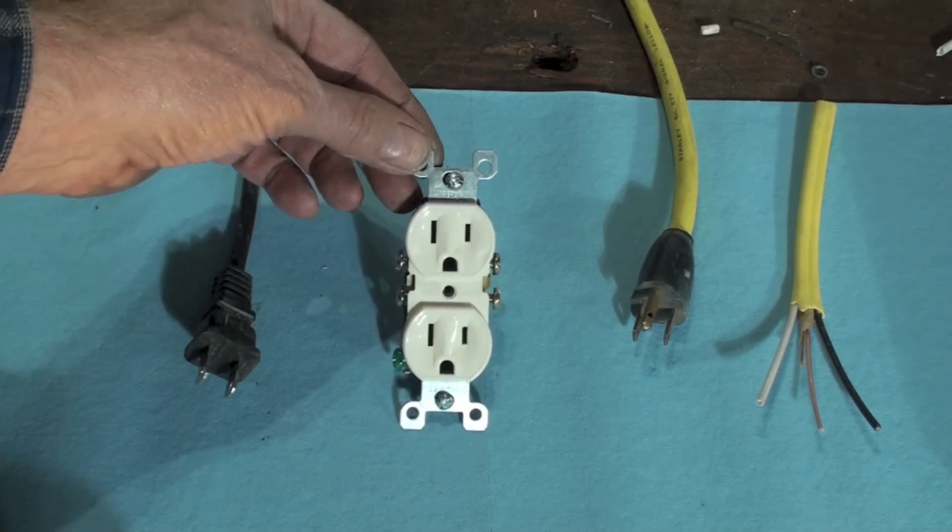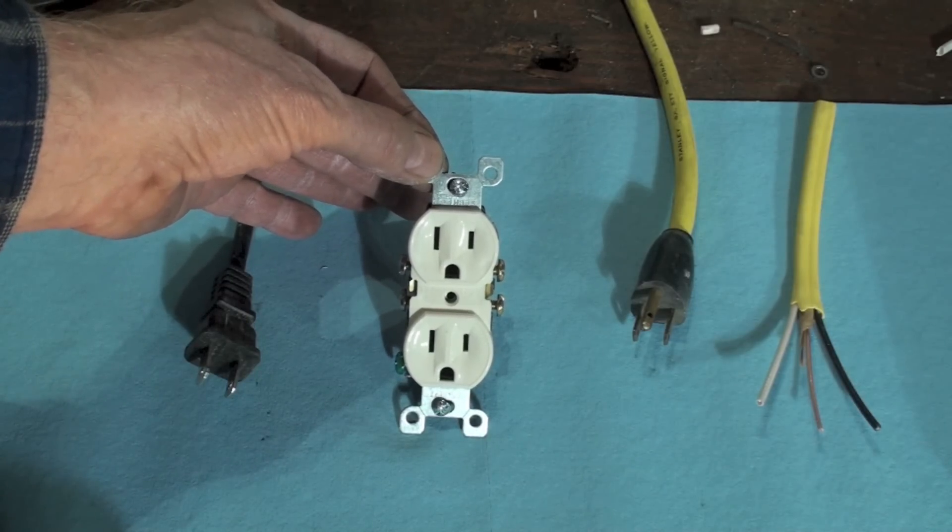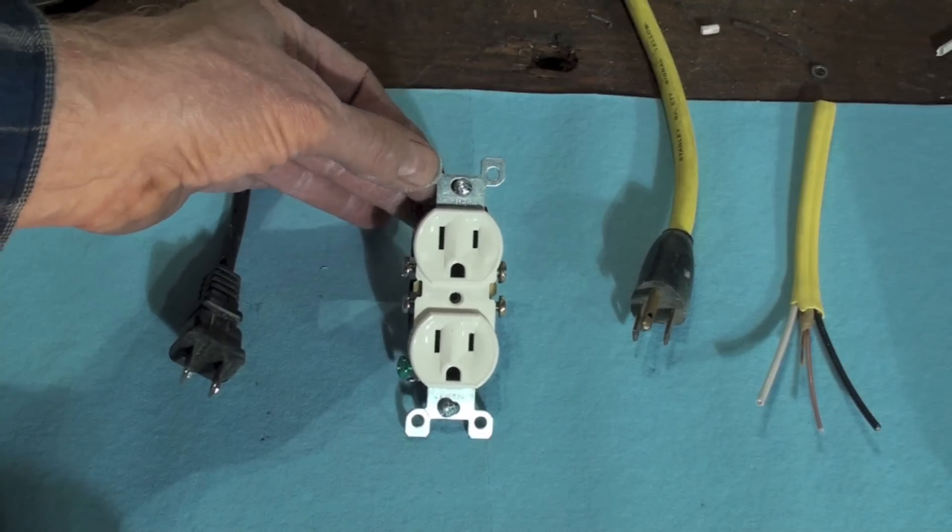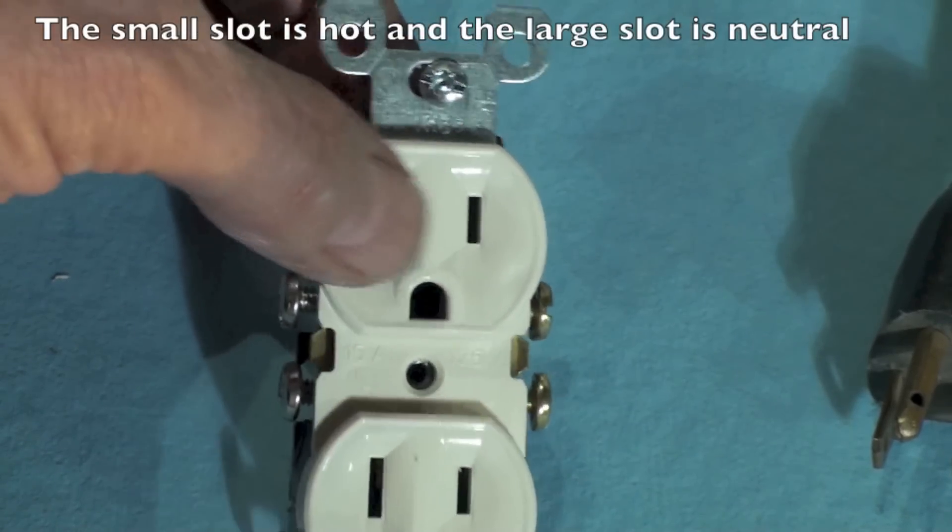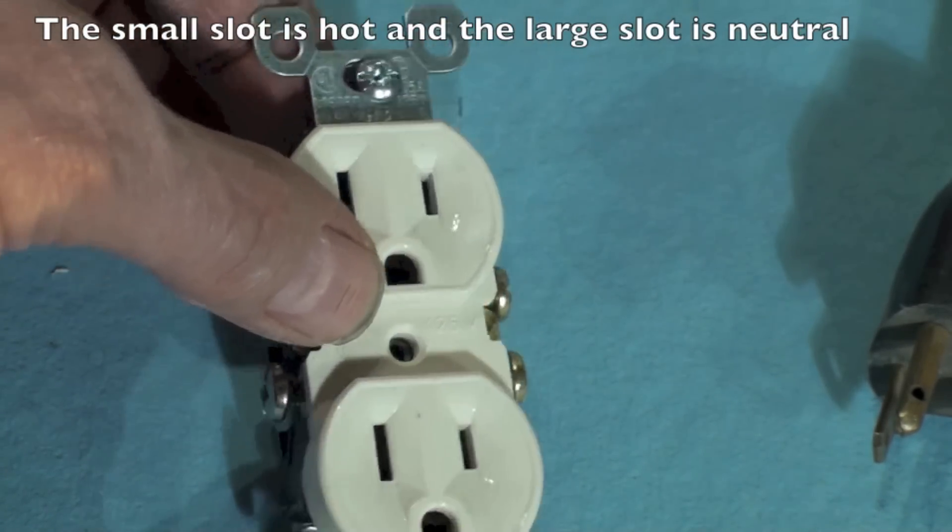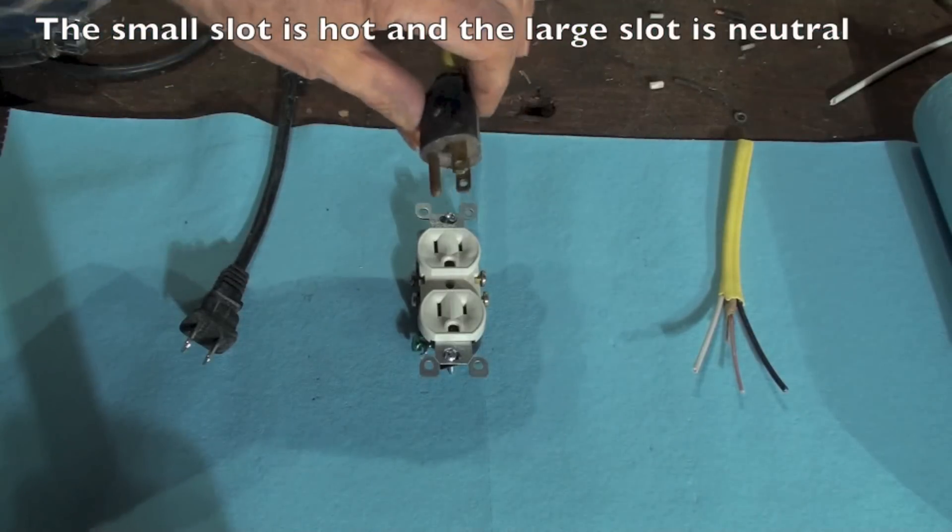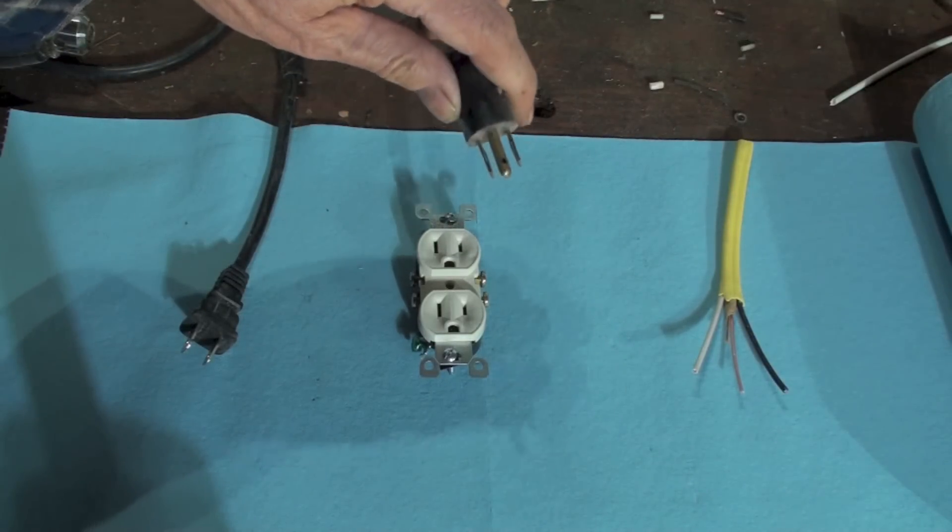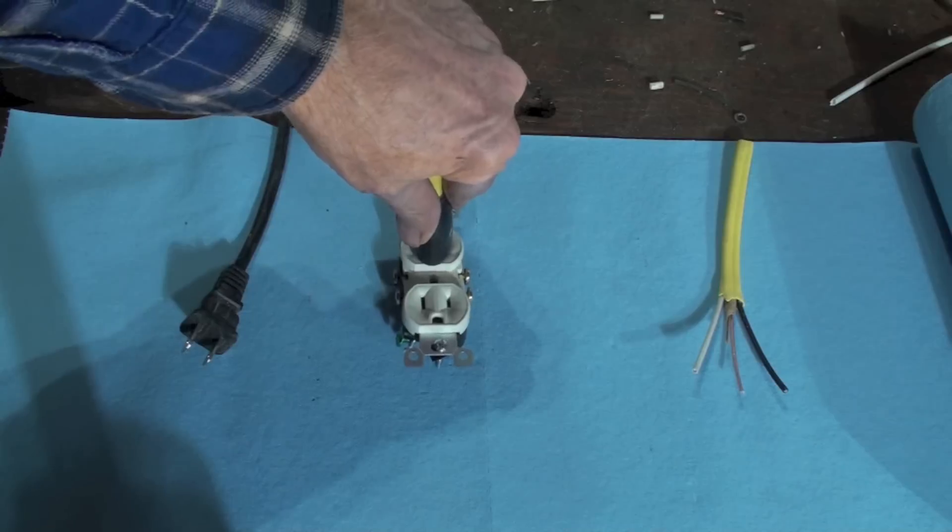Okay, here's your standard 15 amp outlet. If you look close at this, you'll see there's a big slot and a little slot, and then there's a D slot. When I go to plug in something here, here's my happy little grounded cord, and I plug it in and it fits right in.